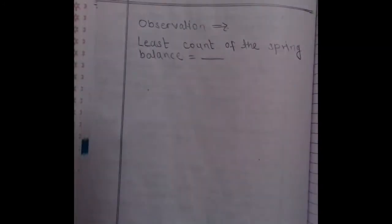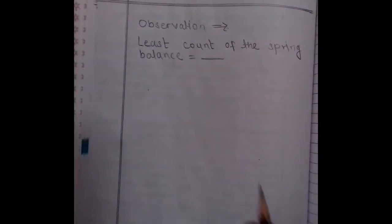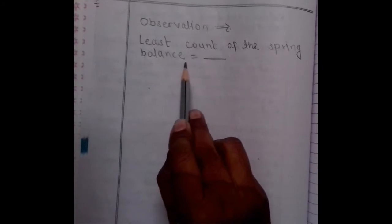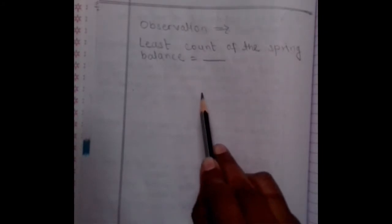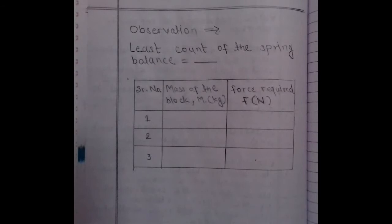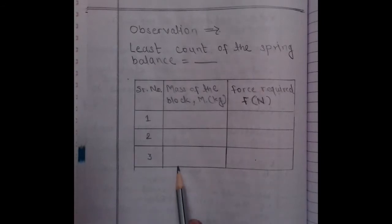Now, here we will write the observations. First of all, we will write the least count of the spring balance. Below that, draw the observation table here. This is the observation table.